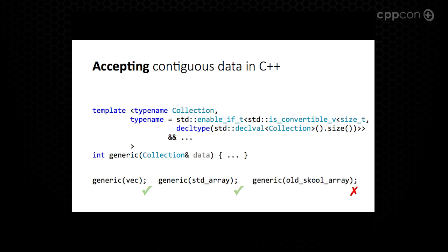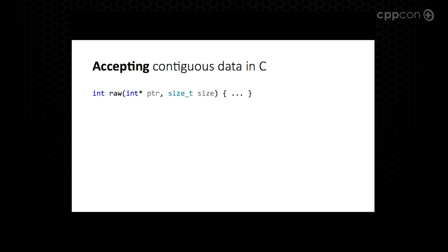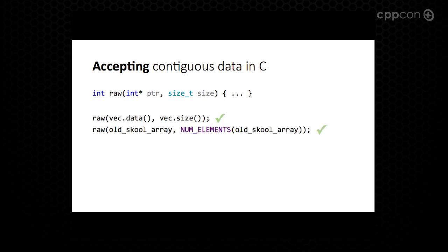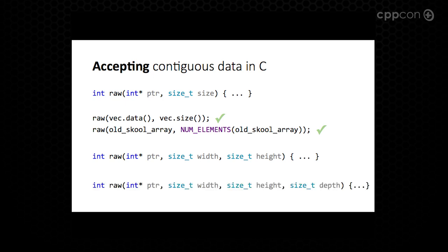Then you try to pass the old-school C array — not so good anymore. As an alternative, we can try the C way of things, where we accept a raw pointer and its size. Of course we can pass a vector. We can pass a C array, and we even get to use a macro. Then you can generalize your algorithm to more dimensions, so you add more function parameters — for two-dimensional you have width and height, for three-dimensional you add depth, and so on.